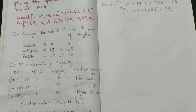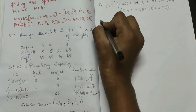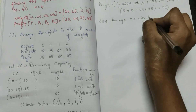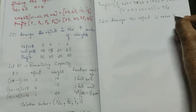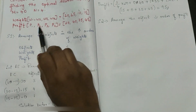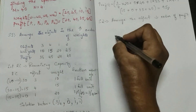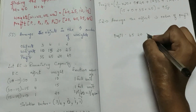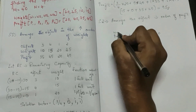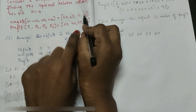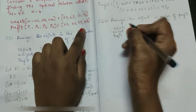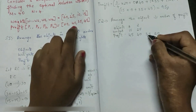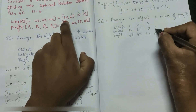For Strategy 2, arrange the objects in decreasing order of profit. Profits from largest to smallest: 45 (object 4, weight 15), 40 (object 2, weight 25), 35 (object 3, weight 10), 20 (object 1, weight 20). With RC = 40: first weight 15 (object 4) → 40 minus 15 = 25 remaining, one full unit added.